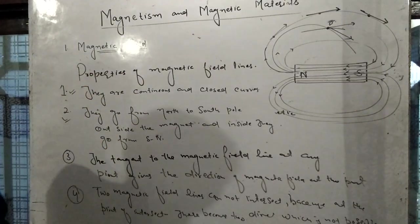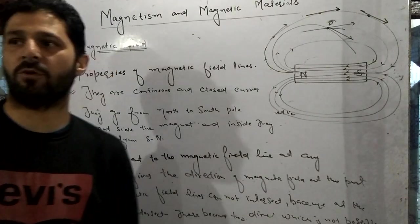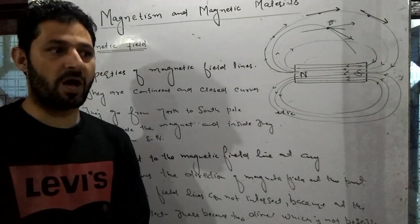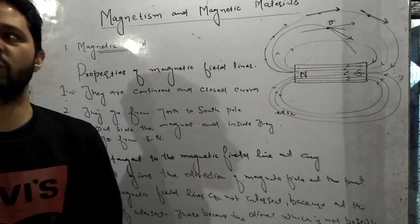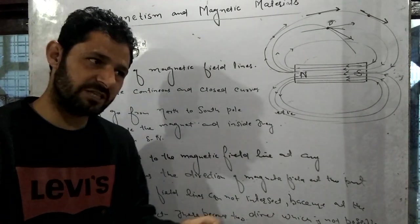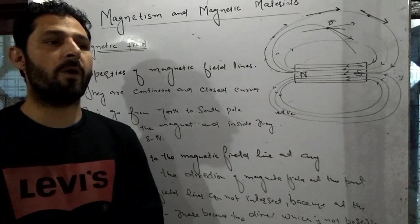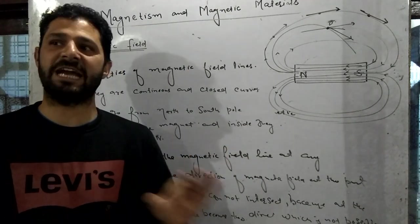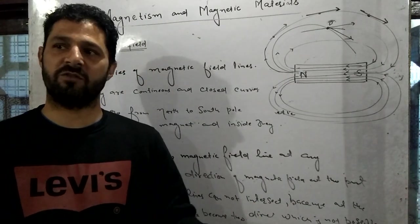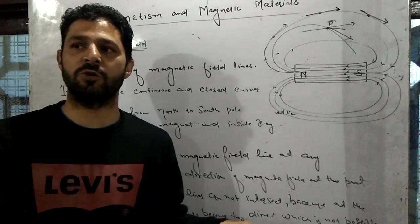To summarize the properties so far: magnetic field lines are continuous and closed curves; outside the magnet they go from north to south and inside from south to north; the tangent at any point gives the direction of the field; and no two field lines can intersect. In some books, magnetic field lines are defined as curved paths tangent to which at any point gives the direction of the magnetic field at that point.